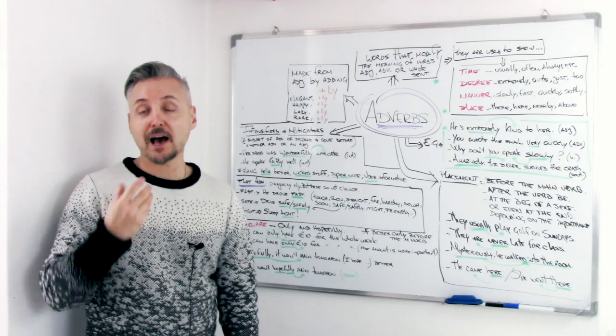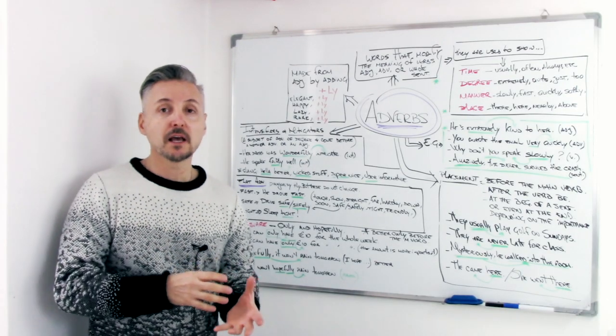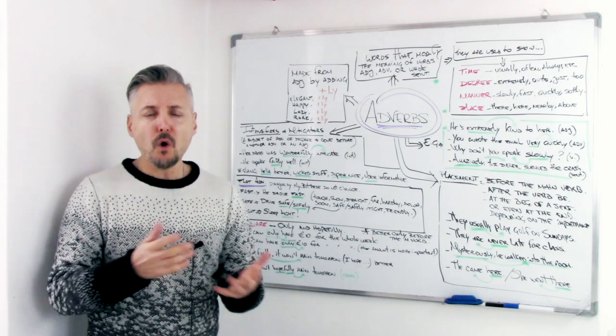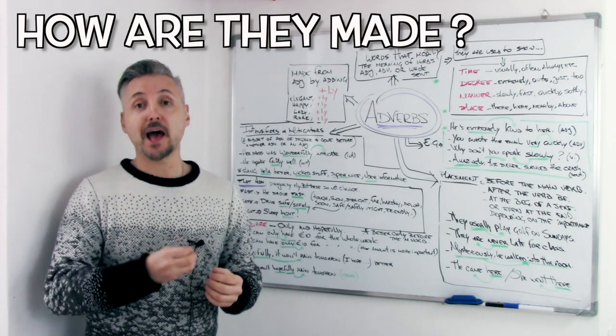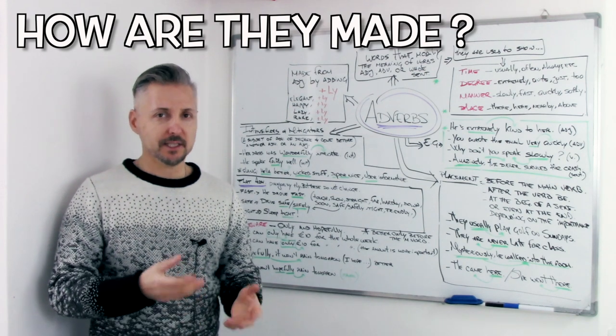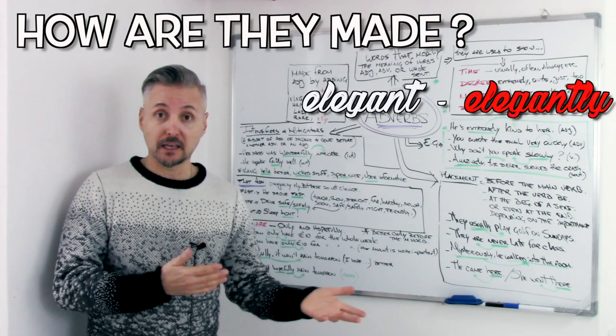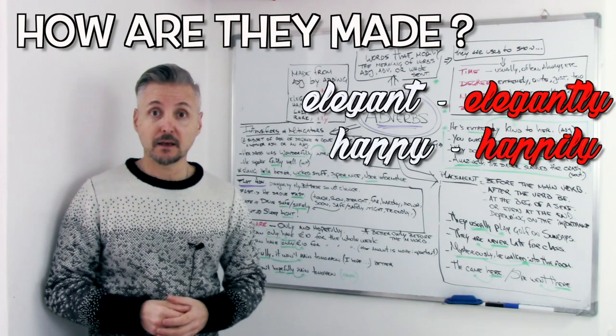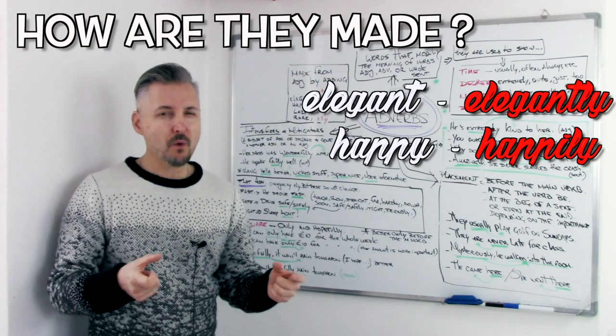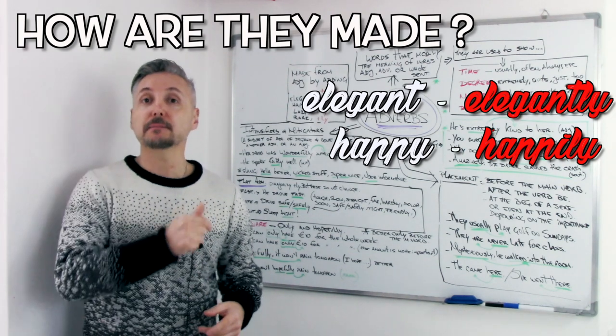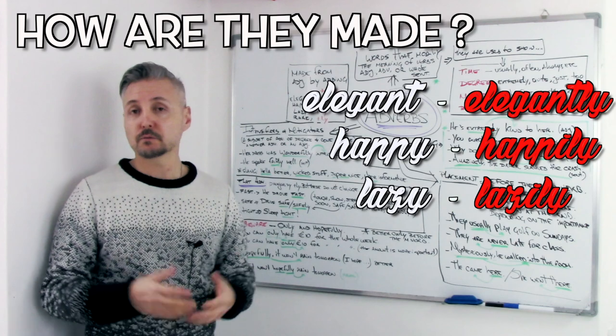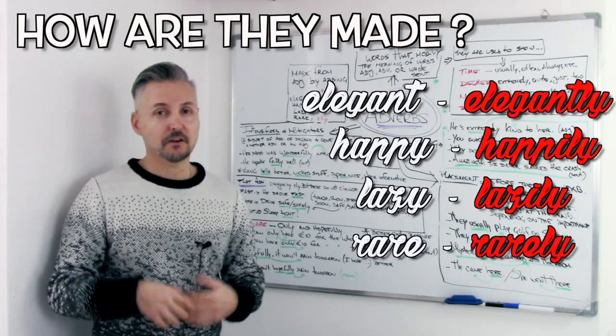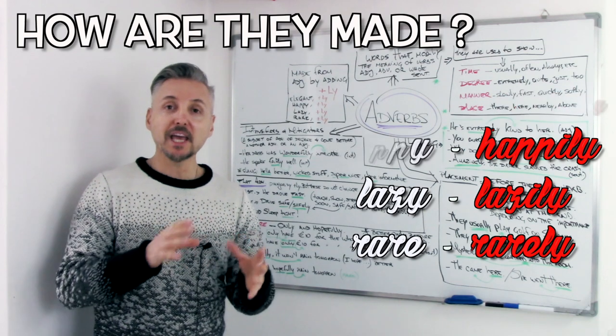I talked about how adverbs can modify the meaning of verbs, adjectives, other adverbs, or whole sentences. But how are they made? Well, we need an adjective, and we add -ly to it. For example. Elegant? Elegantly. Happy? Happily. Be careful there. We have a y, so the y turns into an i. Happily. Like? Lazy. Lazily. And we can say rare. Rarely. There are many others. But, usually, we add -ly at the end of adjectives.